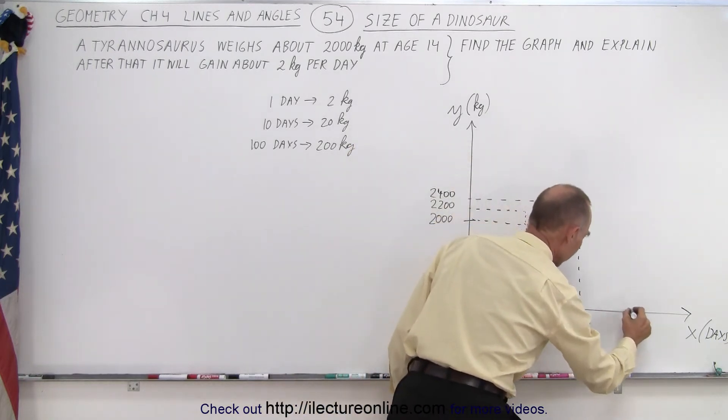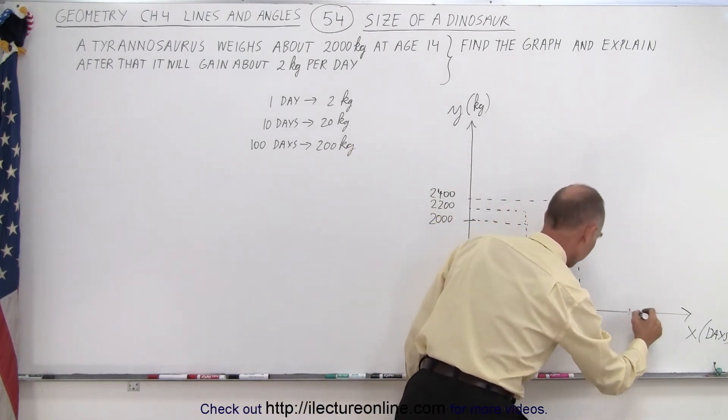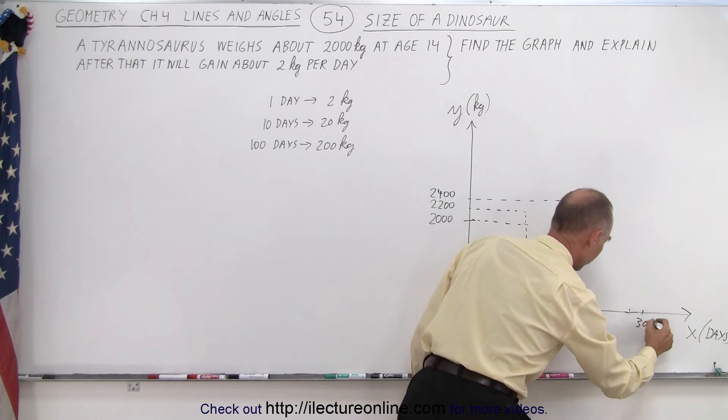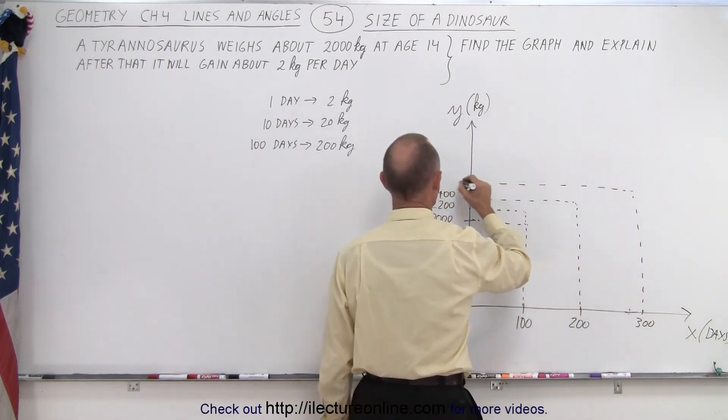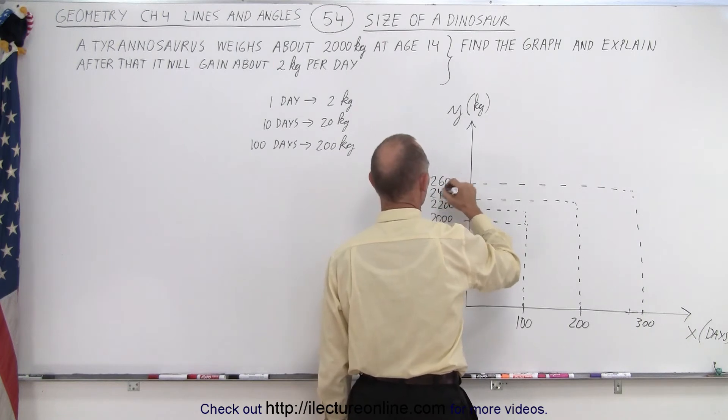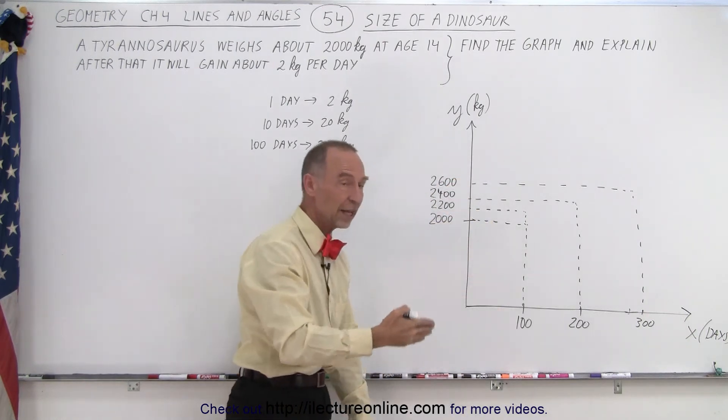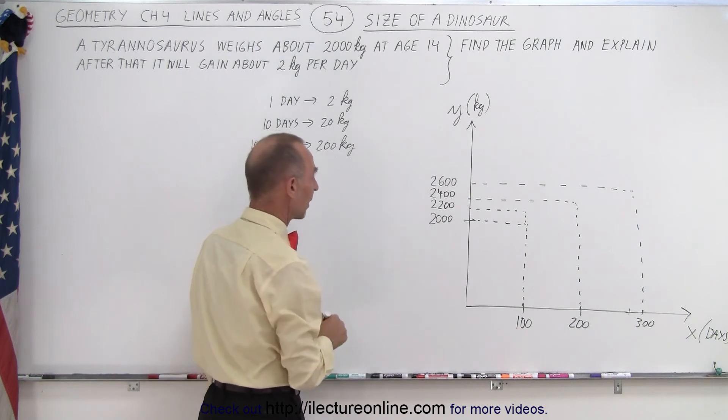And after another 100 days, so now we're up at, make it a little bit further, right there. Now we're at 300 days. Notice, now his weight will be 2,600. You can see that for every 100 days, he will gain 200 kilograms.